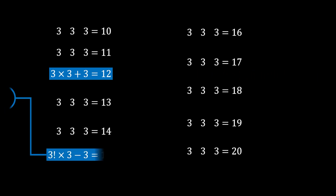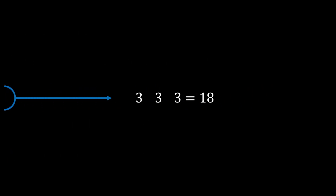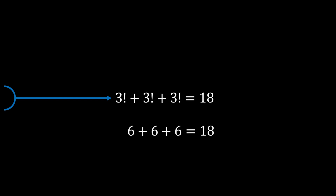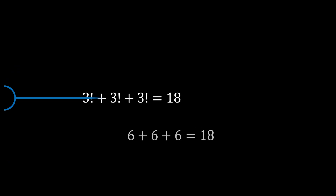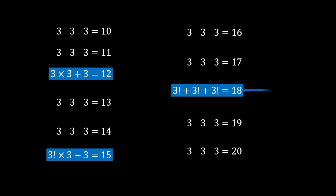For 18: 3! + 3! + 3! = 6 + 6 + 6 = 18. As you can see, with the use of factorials this task becomes really simple.